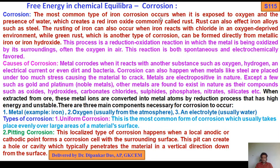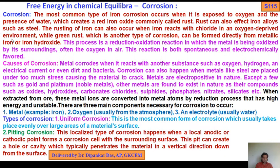The most common type of corrosion occurs when iron is exposed to oxygen in the presence of water, which creates red iron oxide commonly called rust. Rust can also affect iron alloys such as steel. Rusting of iron can also occur when iron reacts with chloride in an oxygen-deprived environment, while green rust can be formed directly from metallic iron or iron hydroxide. This process is a reduction-oxidation reaction in which metal is being oxidized by its surroundings — often oxygen in air. This reaction is both spontaneous and electrochemical in nature, meaning ΔG is negative.